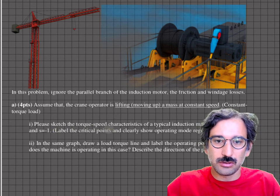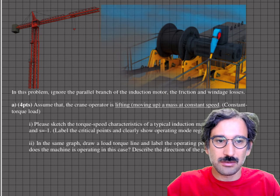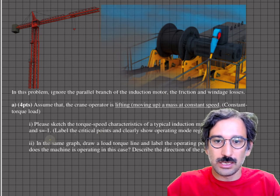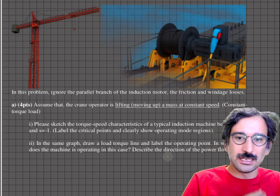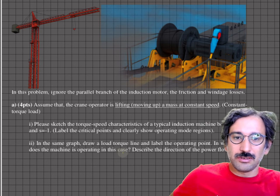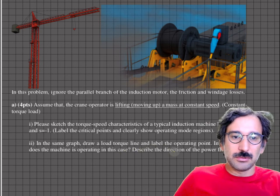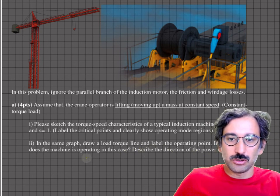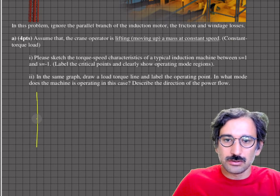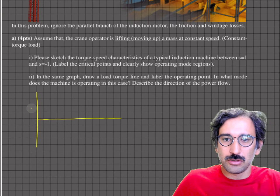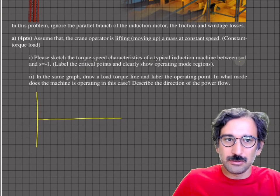The first part asks us to sketch the torque-speed characteristics of a typical induction machine between slip equal to one and slip equal to minus one, label the critical points, clearly show the operating mode regions, and on the same graph draw a load torque line and label the operating point. We also need to identify in what mode the machine is operating when going up.